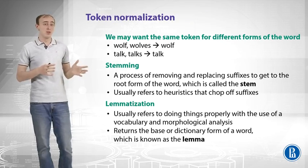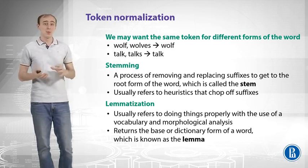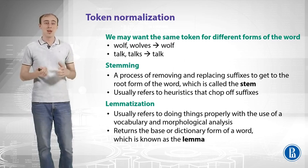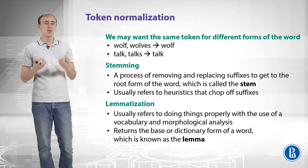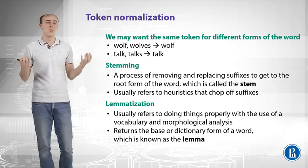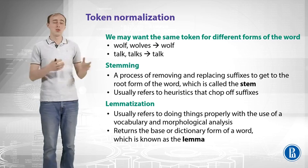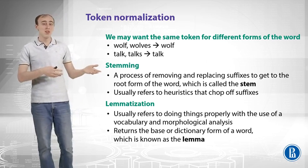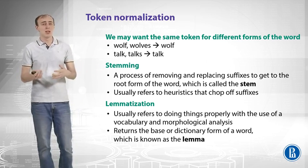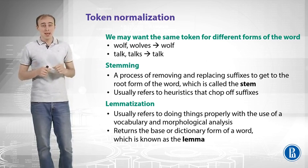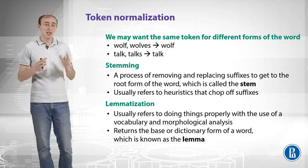The next thing you might want to do is token normalization — we want the same token for different forms of a word. For example, 'wolf' and 'wolves' are the same thing, and we want to merge them into a single token 'wolf.' Similarly, 'talk,' 'talks,' and 'talked' are all about talking and we don't really care about the ending. The process of normalizing words is called stemming or lemmatization.